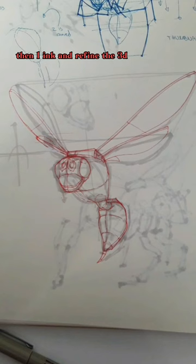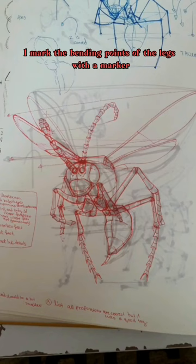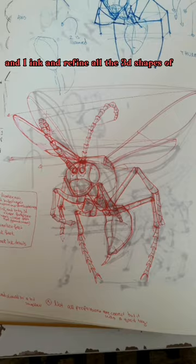I create the motion line and mark the proportions. Then I add the 2D shapes and the details in the 2D shapes. Then I ink and refine the 3D shapes of the main body. I mark the bending points of the legs with a marker and I ink and refine all 3D shapes of the entire body.